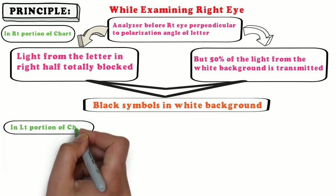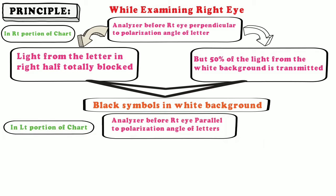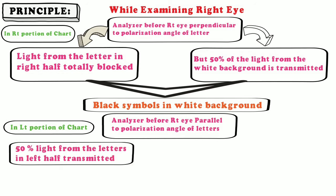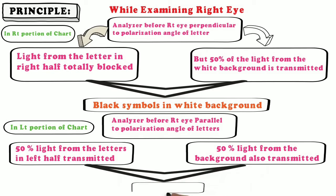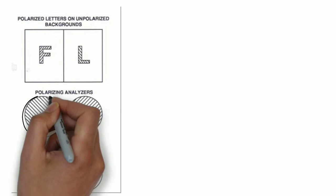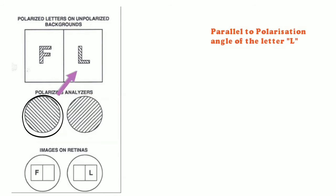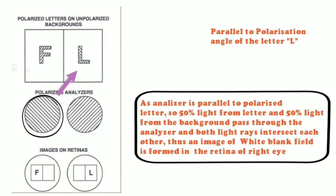For the left portion of the chart, the analyzer before the right eye is parallel to the polarization angle of the letter. With the analyzer parallel to the polarized letter, 50% of light from the letter in the left half is transmitted and 50% of light from the background is also transmitted. As a result, a white blank field is produced. In this figure, the analyzer before the right eye is parallel to the polarization angle of letter L, so 50% of light from the letter and 50% of light from the background pass through the analyzer and intersect, forming an image of a white blank field on the retina of the right eye.